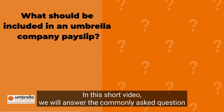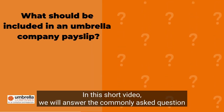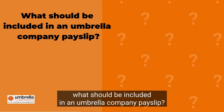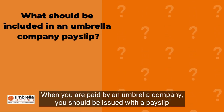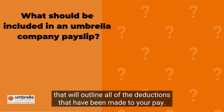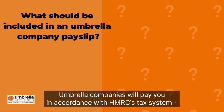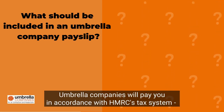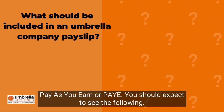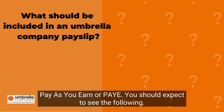In this short video, we will answer the commonly asked question: what should be included in an umbrella company payslip? When you are paid by an umbrella company, you should be issued with a payslip that will outline all of the deductions that have been made to your pay. Umbrella companies will pay you in accordance with HMRC's tax system, Pay As You Earn (PAYE). You should expect to see the following.